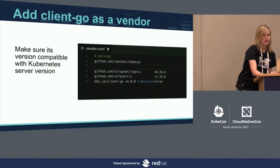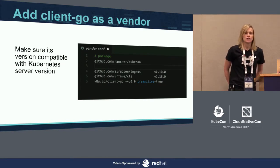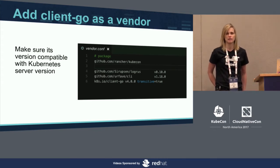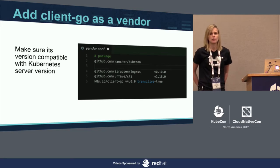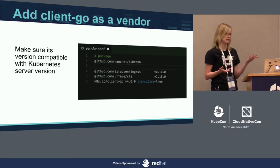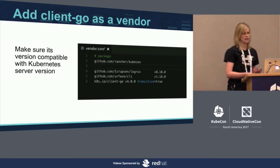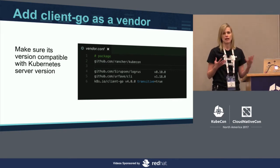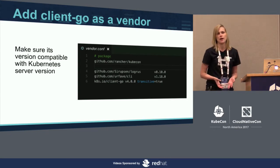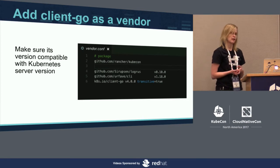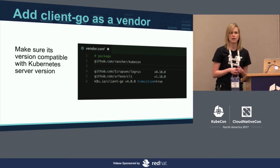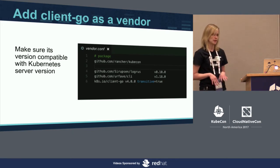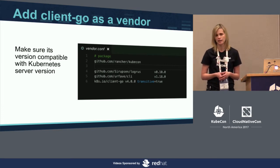The first step is to add the client-go dependency. You have to make sure the dependency is compatible with whatever Kubernetes version you're using. For this demo I'm using version 4.0, which works well with Kubernetes 1.7 and 1.8. You just add it to vendor.conf, then run the trash command. It pulls all third-party dependencies to your project — and if client-go has transitive dependencies, it pulls those in as well. You don't have to define them manually; trash figures it all out for you.